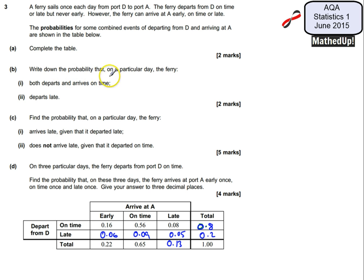Part B says write down the probability that on a particular day the ferry both departs and arrives on time. So we're just reading this straight off the table here. So if it departs and arrives on time we're looking for this value here which is going to be 0.56.